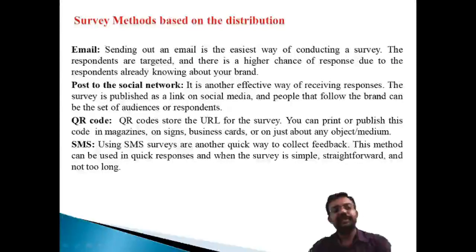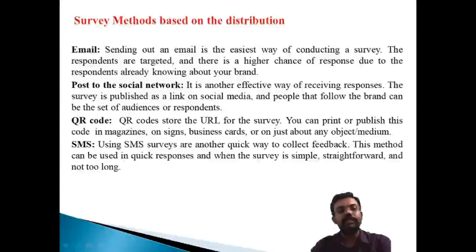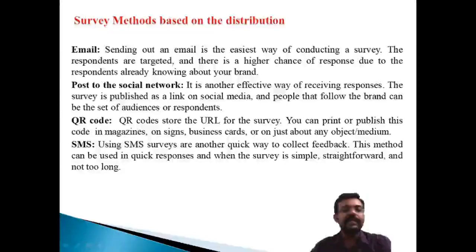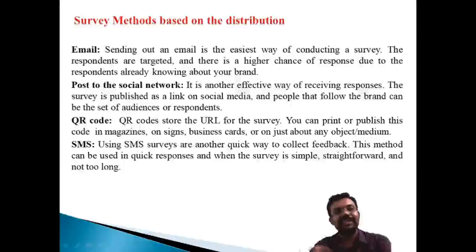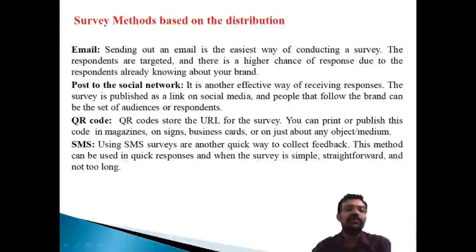The third distribution method is using QR codes. Newspapers and magazines provide QR codes that can be scanned to get survey information. The QR code stores the URL for the survey, and you can publish these codes in magazines, business cards, or other media. The fourth distribution method is SMS — using SMS surveys where respondents reply to a message.